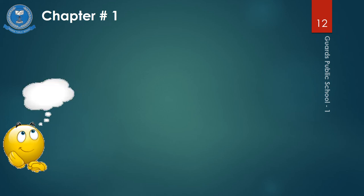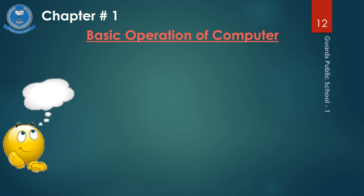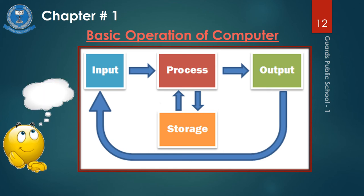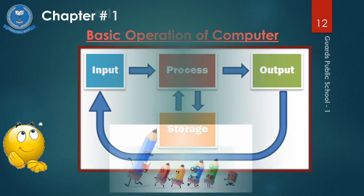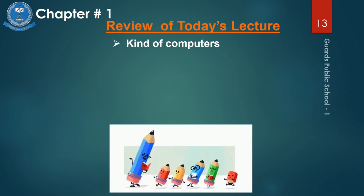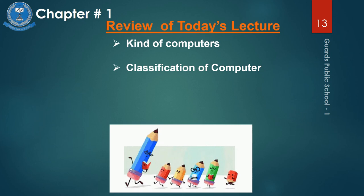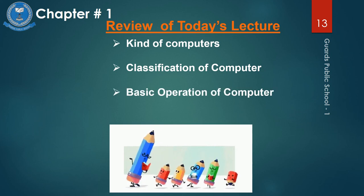Basic operations of a computer: a computer performs three basic operations — input, processing, and output. Data entered into the computer is called input. After that, the CPU of the computer works with that data, which is called processing. Data that has been processed is called output. Review of today's lecture: kinds of computer, classification of computer, basic operation of computer, and assignments.